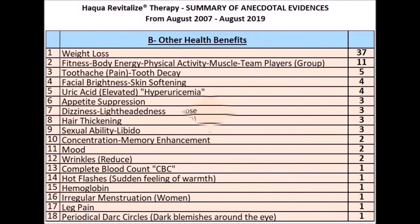B. Various Health Benefits. 1. Weight loss: 37 people. 2. Fitness, body energy, physical activity, muscle: 11 people — including one team of football players. 3. Toothache pain, tooth decay: 5 people. 4. Facial brightness, skin softening: 4 people. 5. Uric acid elevated or hyperuricemia: 4 people.